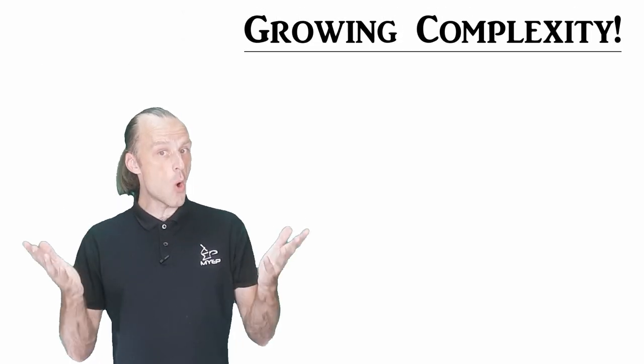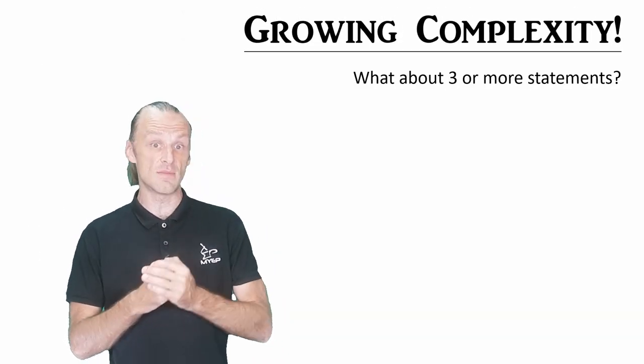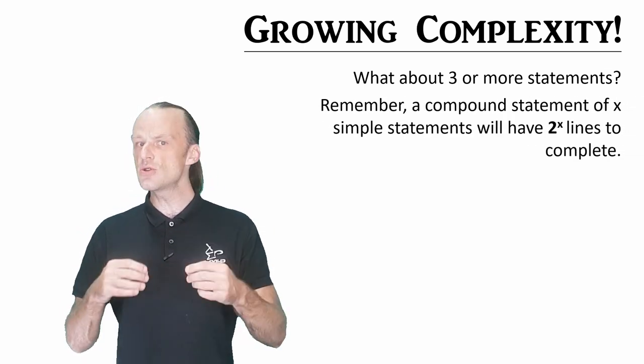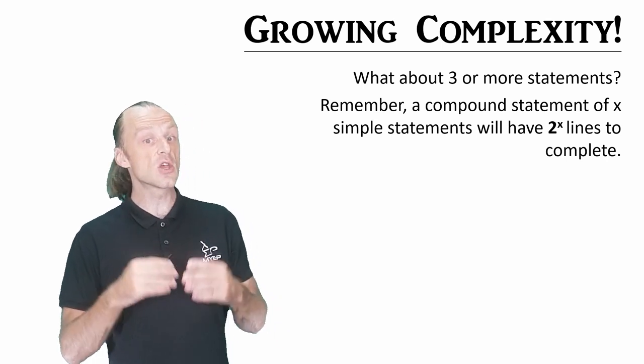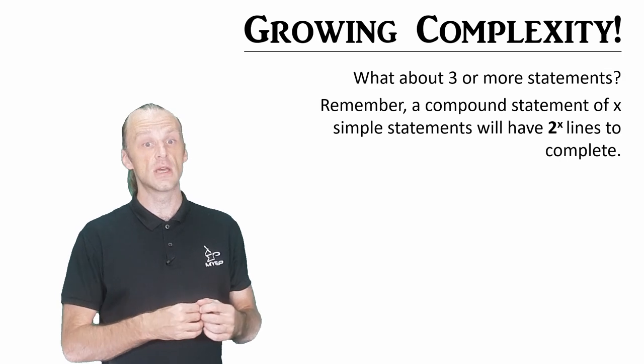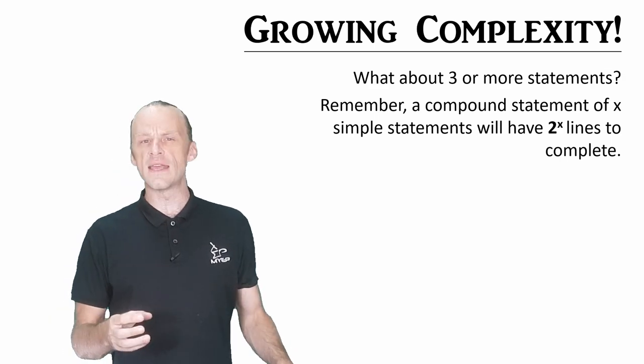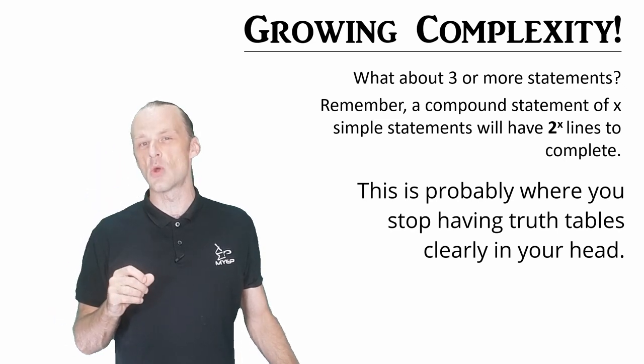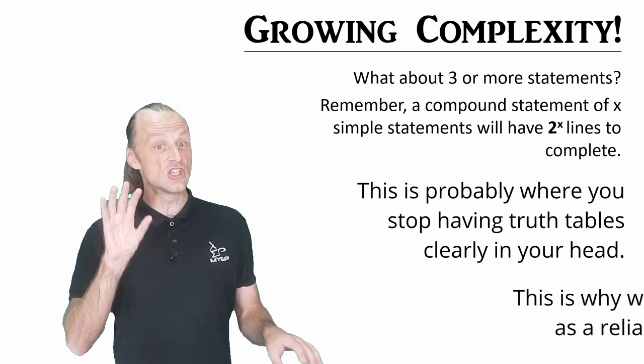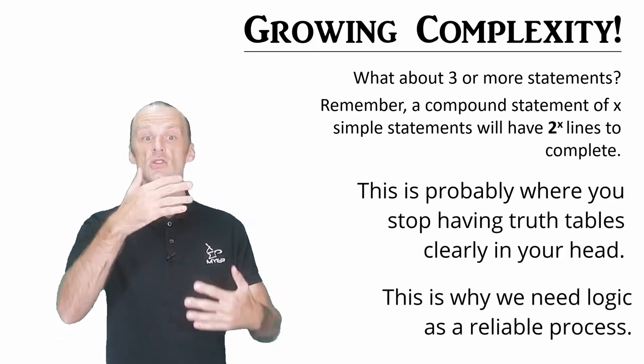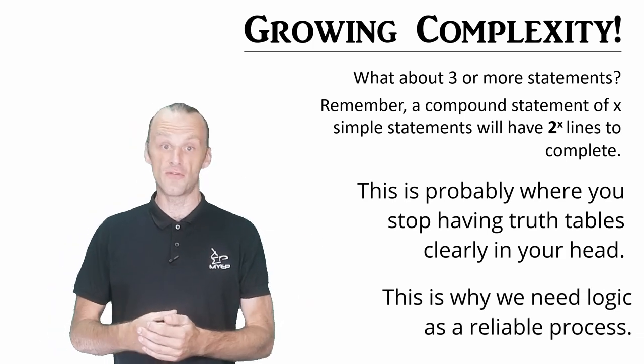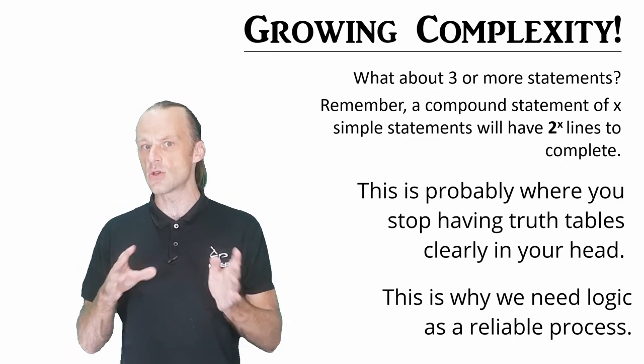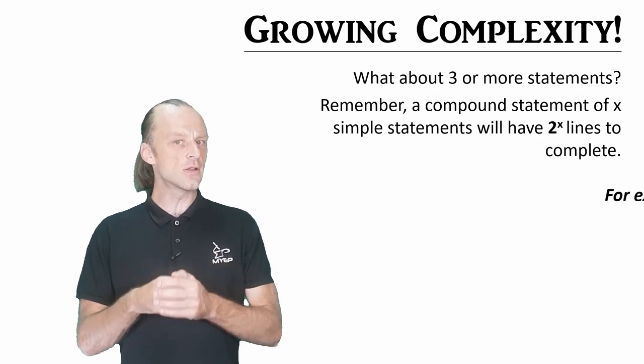Things get even more complex if we add just one more simple statement. Remember, a compound statement made from x simple statements has two to the power of x possible situations, because we multiply by two x times. So we're doing even more lines, and if it hasn't happened already, you probably now can't keep track of all the options in your head. Don't worry, this is normal, and it's just why we need to have a set of rules that can work through our logic for us. If you do get deeply into logic, then you will start to get more intuition about these complex cases. But let's look at an example.